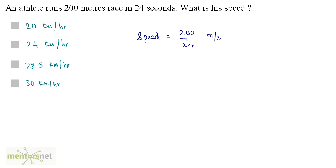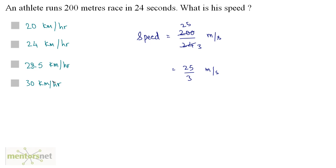Now, 8 times 3 is 24 and 8 times 25 is 200. So this is 25 by 3 meters per second. Now you have the speed in meters per second, but you need it in kilometers per hour because all of the options are in kilometers per hour.